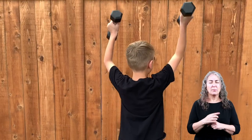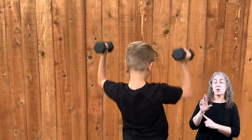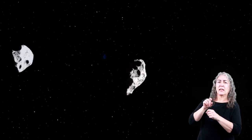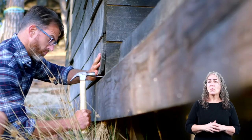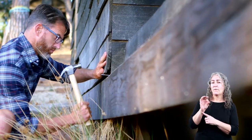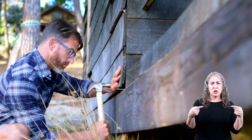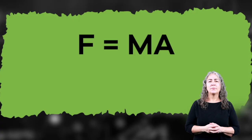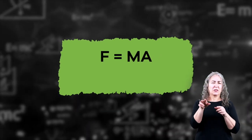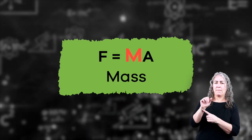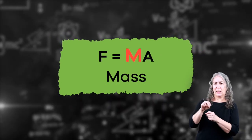Sometimes people apply force to things, and other times different objects apply force to each other. But whenever a force is applied, there are always two things interacting. Now let's define the word mass in Newton's equation.